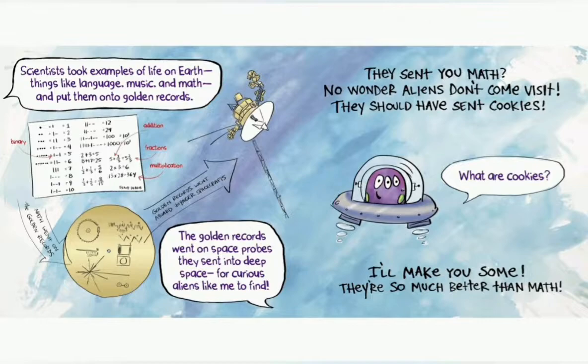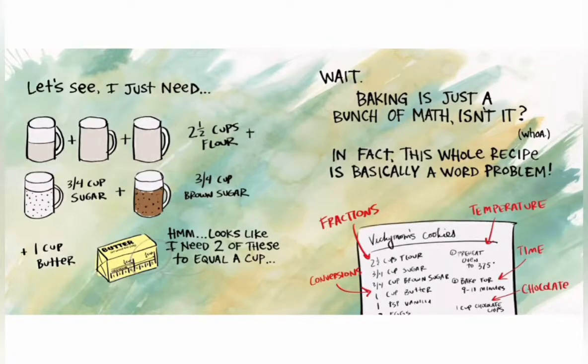Let's see, I just need two and a half cups of flour, three-fourths cup of sugar, three-fourths cup of brown sugar. Do you understand what's going on? This uses math. Recipes use math. See, two and a half, three-fourths, three-fourths. One cup of butter. Looks like I need two of these to equal a cup. Wait, baking is just a bunch of math, isn't it? Whoa, see, I told you.